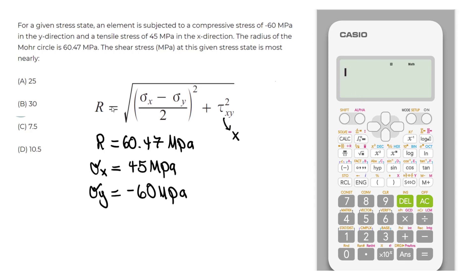So we will begin. Then we have the equal sign on the left is R. R is 60.47. So let's begin with that. 60.47.